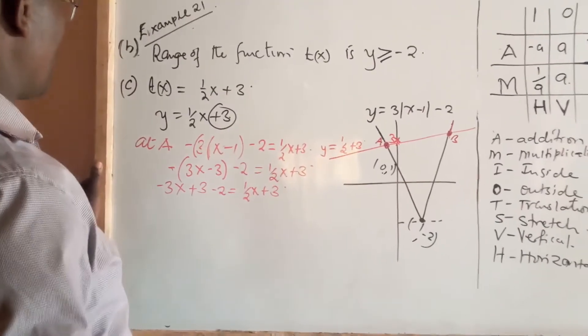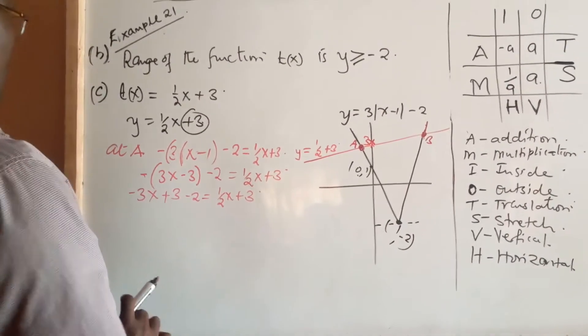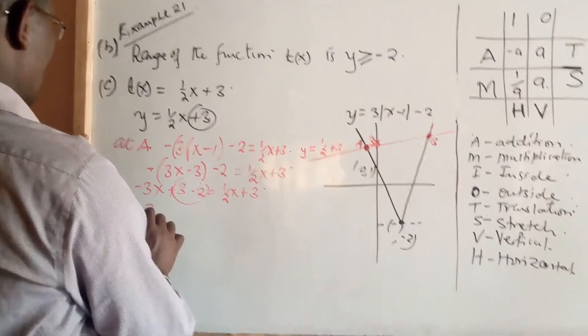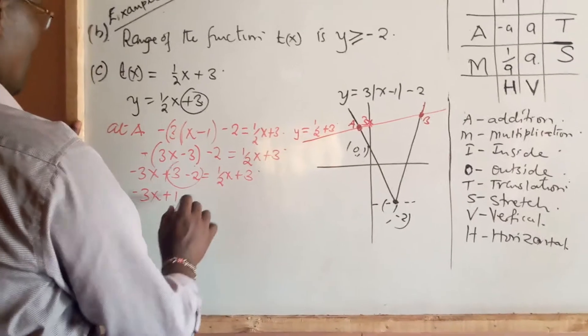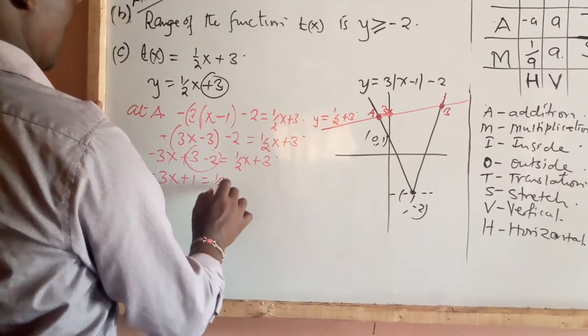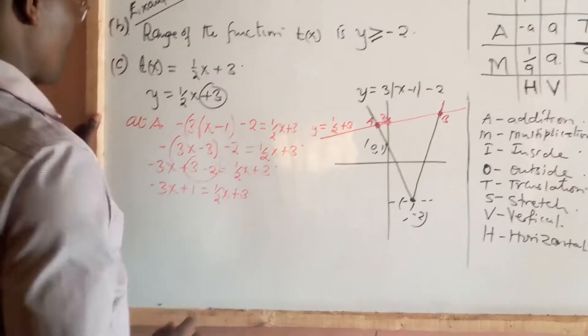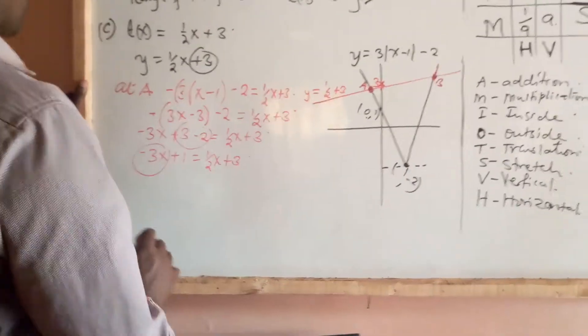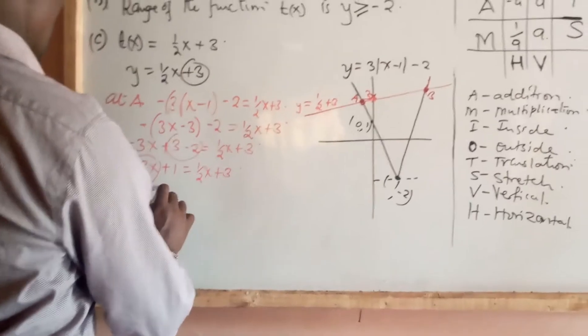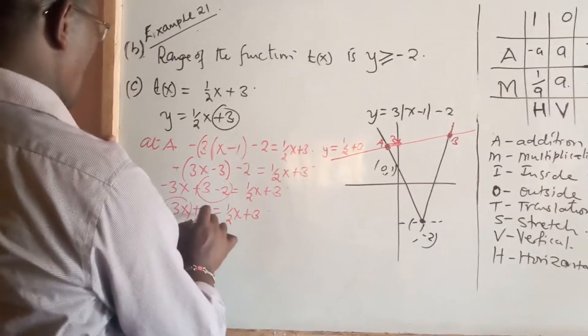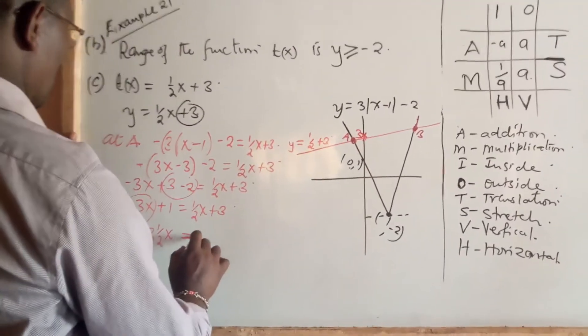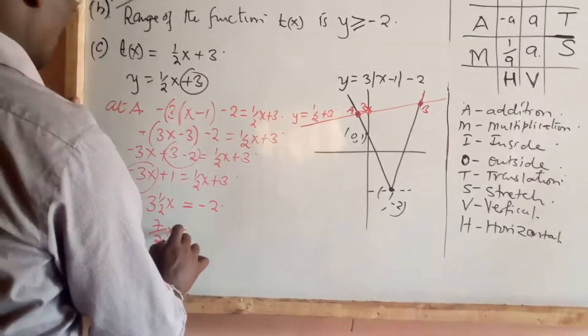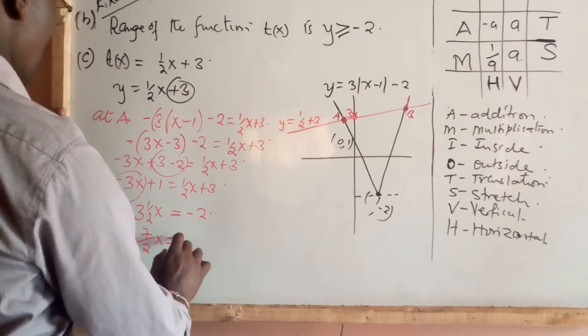So if we collect the like terms here, we're going to have -3x + 1 = (1/2)x + 3. If we bring 3x across, then you're going to have 3.5x = 1 - 3, which is -2. And this is (7/2)x = -2.